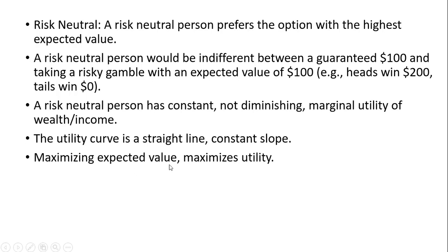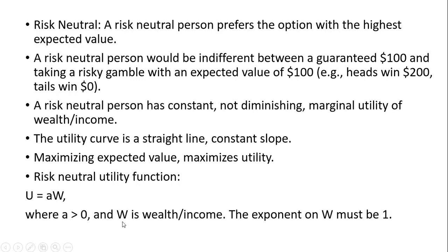Maximizing expected value will maximize utility. Let's take a look at a risk-neutral utility function. Utility equals A times W, where A is a parameter greater than zero and W is wealth or income. The exponent on wealth must be one.